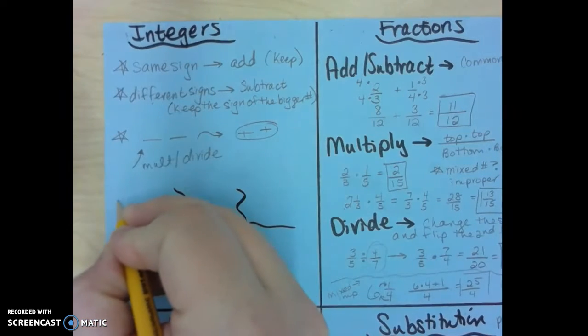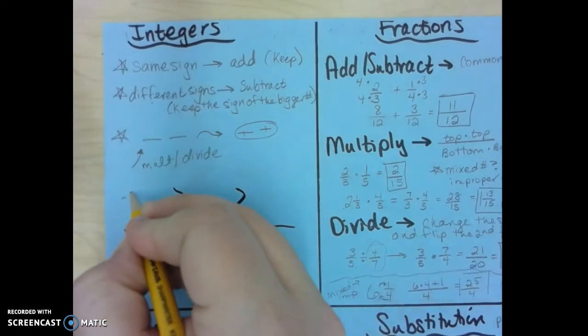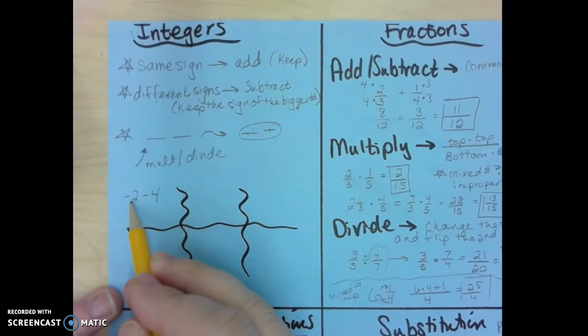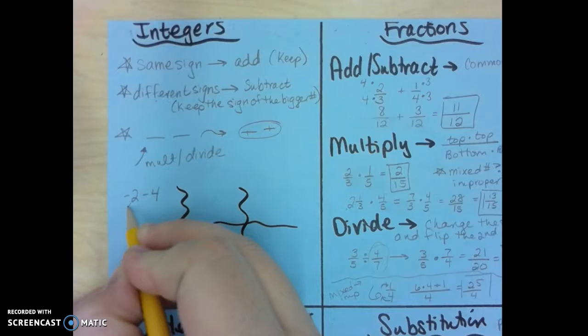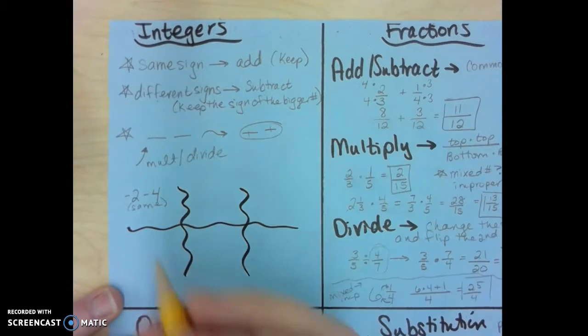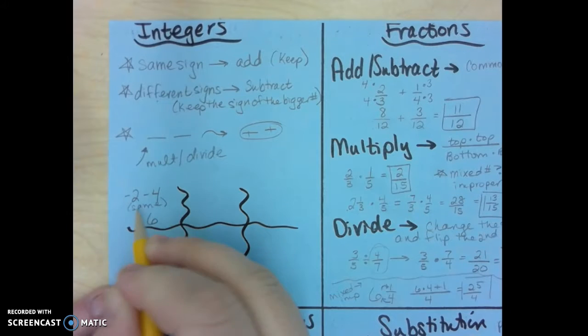So let's go ahead. I have these squigglies down here, so we can do a couple examples. So a negative 2 and a negative 4, these are the same sign. So I'm going to add, and so that's 6, but because they're both negative, it's a negative 6.